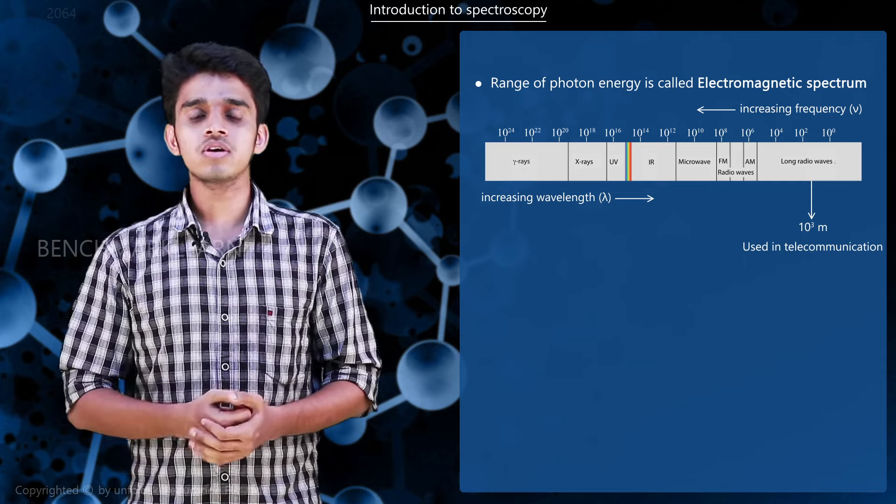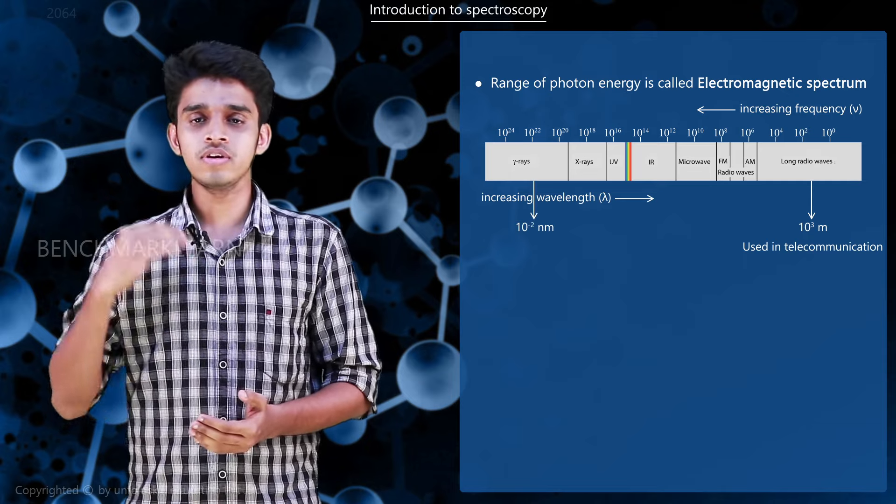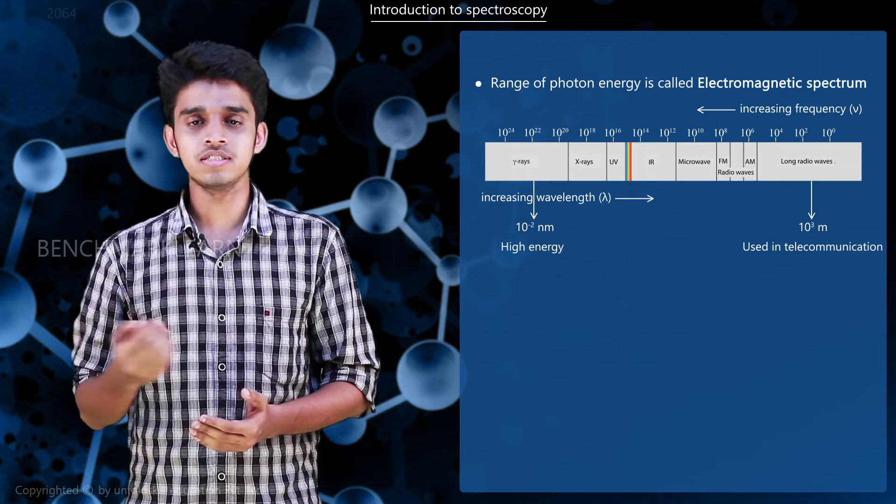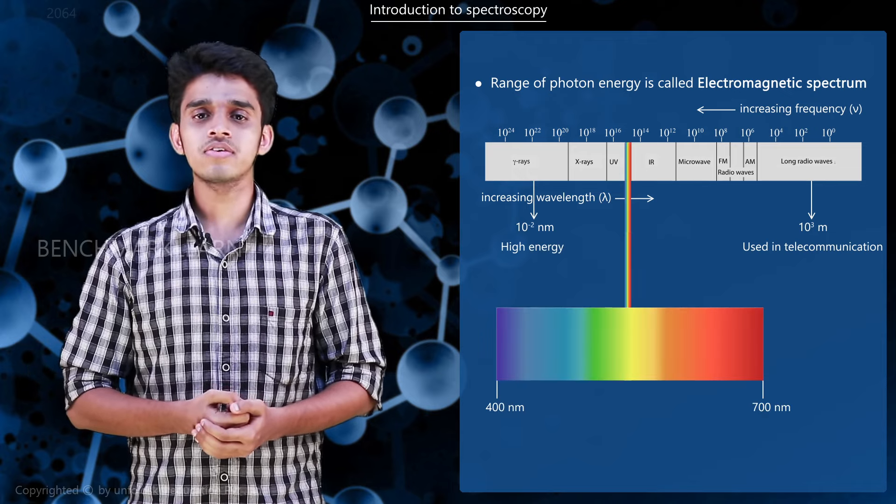On the other end we have gamma rays which are of very low wavelength of 10⁻² nanometers but of very high frequency and high energy. Our visible light comes in the range of 400 to 700 nanometers.